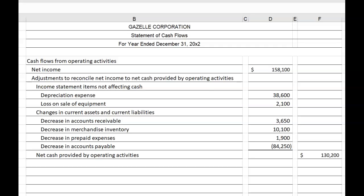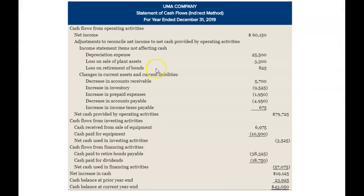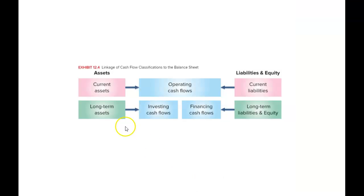If you don't have it, please download and print the worksheet or download the Excel Workbook and go back to Video Lecture 12.9 so you can catch up before continuing with this video. As shown on the format that we've been following, the UMA Company example on page 469 of your textbook, the next thing we need to do is report cash flows from investing activities.